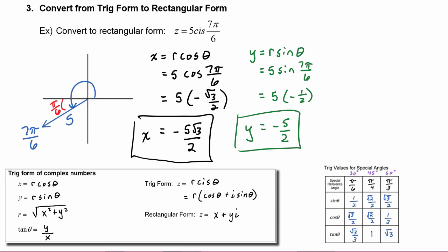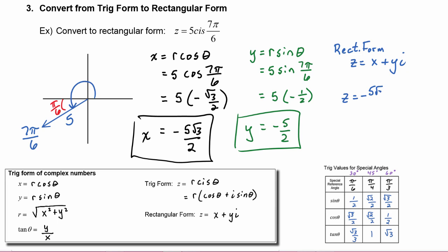We have to write z in rectangular form. We know that means z is going to be x plus y times i. Substituting in the x value and the y value we found, z equals negative five radical three over two minus five-halves i.